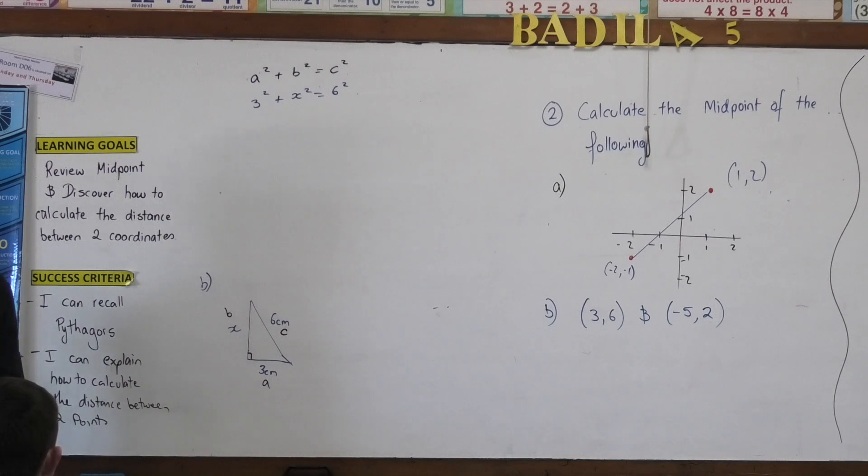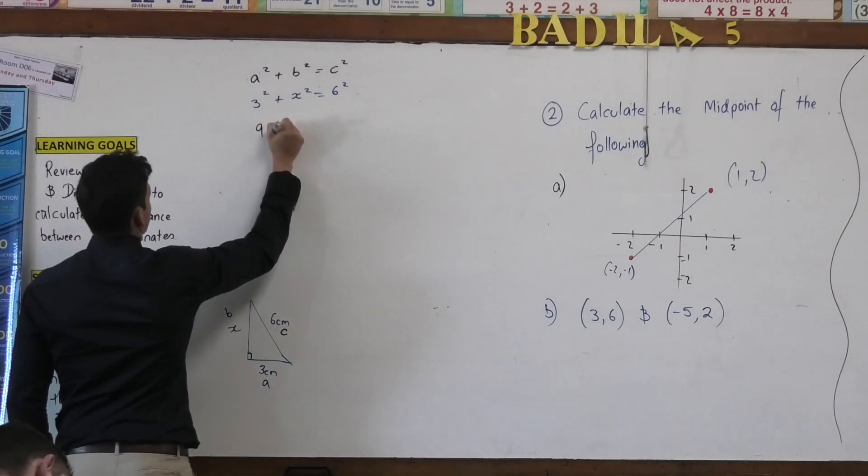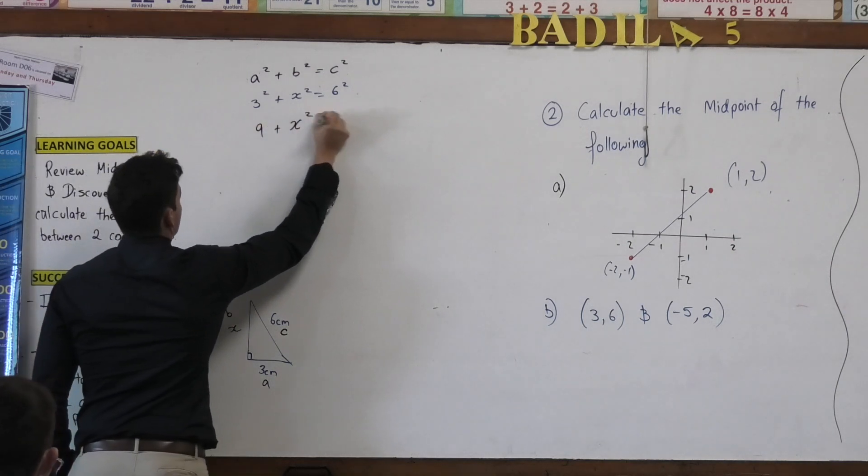You can actually square it. Yeah, so what is 3 squared? Oh wait, 9. 9. So I've got 9 plus x squared equals 36.